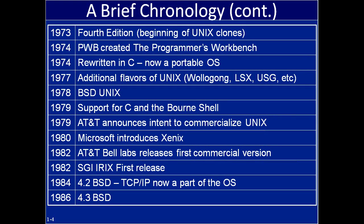In 1974, Unix was rewritten in C, which made it portable. You could now basically put it on any kind of chipset, and in today's world we have a lot of different varieties of Linux running on all different platforms. Windows even has its own version of Unix, as we'll see here shortly.